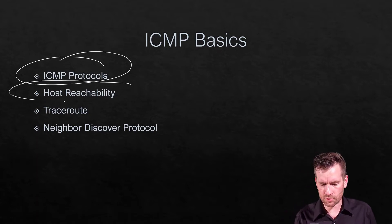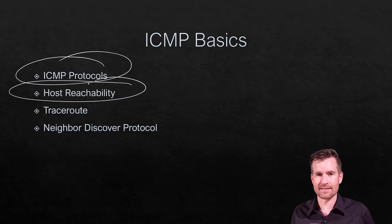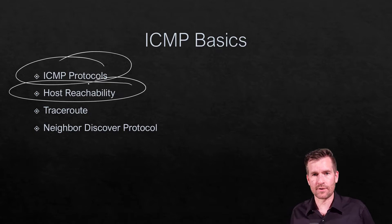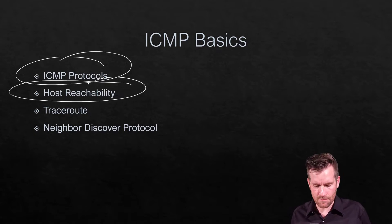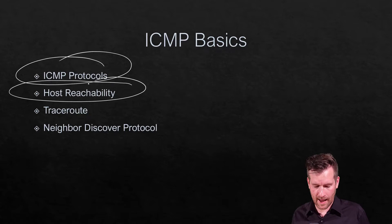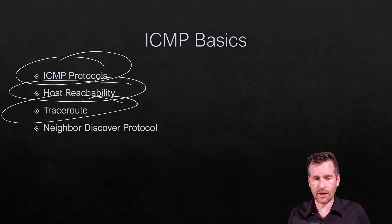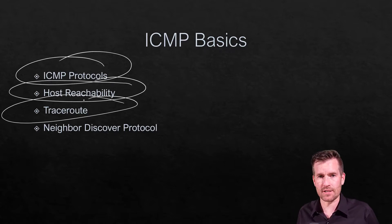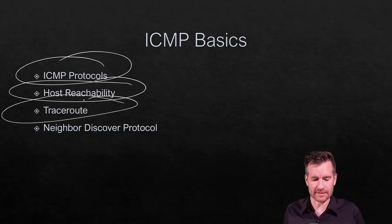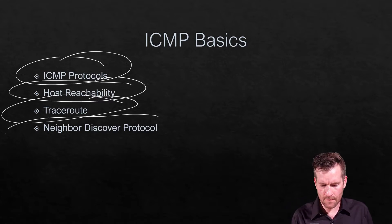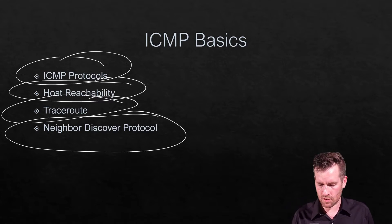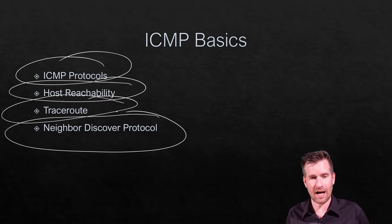We're going to talk about host reachability and some of the reply messages that we'll get back, both in IP version 4 and IP version 6. We're going to get into traceroute and how traceroute can help us out. And then finally, we're going to wrap it up with a short discussion on neighbor discovery protocol.